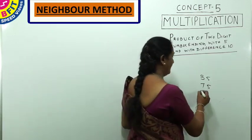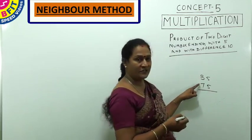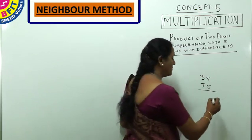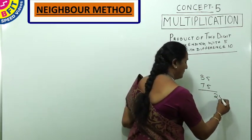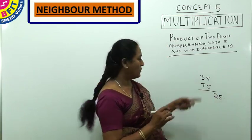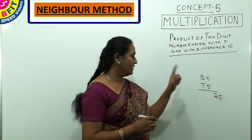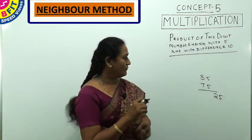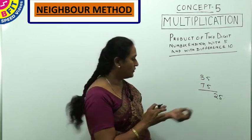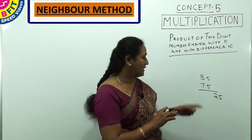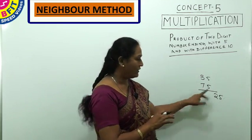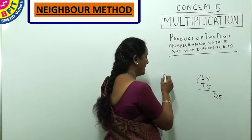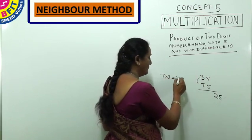For numbers ending with 5, here is the general rule: if both digits before the 5 are odd, or both are even, the last two digits will always be 25. If one is even and one is odd, the last two digits will be 75. For the remaining digits when both are odd or both even, take the product of those digits — for example, 7 and 3 gives 21.